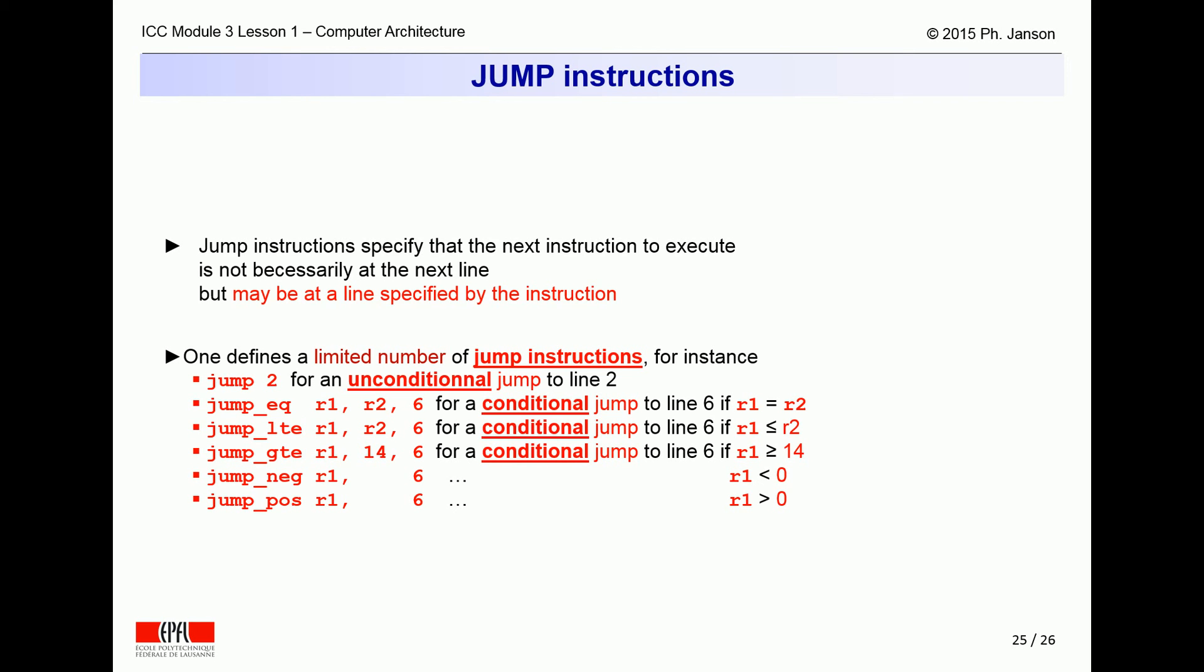And some of these jump instructions may be subject to conditions to be tested. Thus a plain jump instruction takes a single parameter, which is the target line number. Conditional jump instructions compare one register to another or to a constant, which may be zero, to decide whether to continue at the next line or to jump to the one indicated in the instruction.